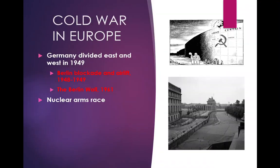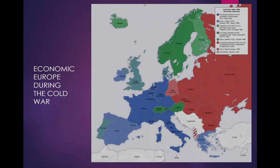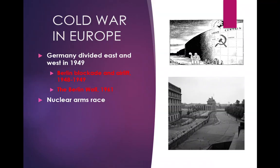In 1961, the Russians built a wall through Berlin. Western Germany had a much higher standard of living than Eastern Germany, so people in Berlin were simply going to the Western part of Berlin to get to the non-communist area. A lot of people were leaving the communist area, so in order to prevent people from leaving, they built a wall through Berlin called the Berlin Wall. The Berlin Wall became symbolic of the Cold War.